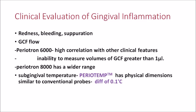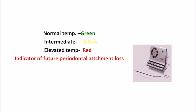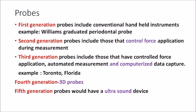That is why Periotron 8000 came into being — it has a wider range. Next is subgingival temperature, another clinical feature. The instrument is Periotemp, which has physical dimensions similar to a conventional probe. When inserted into the pocket, it can detect a difference of up to 0.1 degrees Celsius. Normal temperature gives a green color, intermediate gives yellow, and elevated temperature gives red — indicating future periodontal attachment loss.